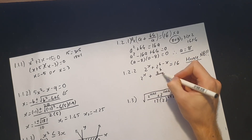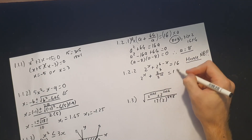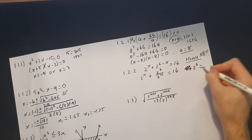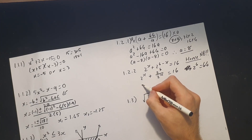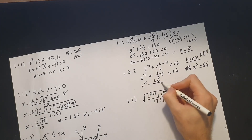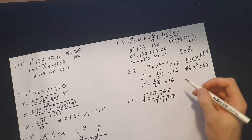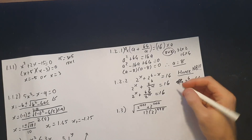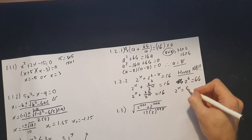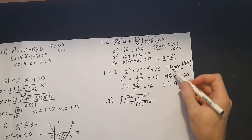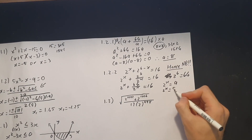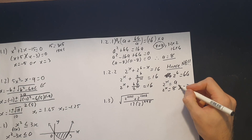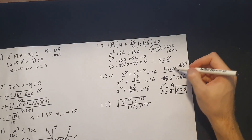Notice 2^6 = 64, so we have 2^x + 64/2^x = 16 — this looks exactly like the expression in 1.2.1. So let 2^x = a. Since a = 8, we have 2^x = 8 = 2³, therefore x = 3.